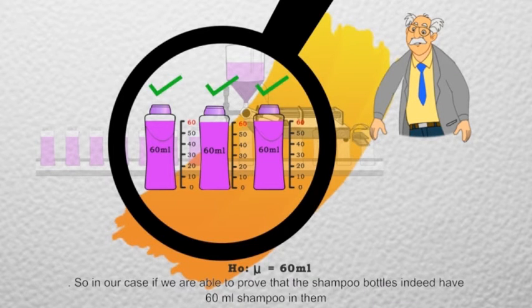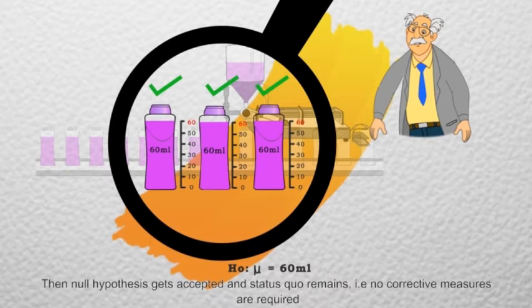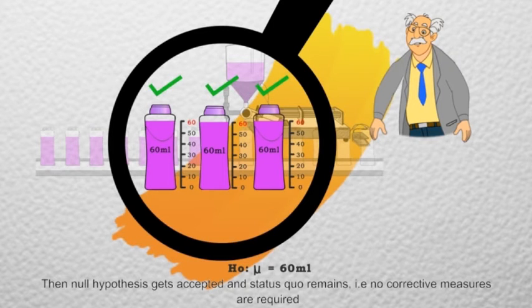So in our case, if we are able to prove that the shampoo bottles indeed have 60 ml shampoo in them, then null hypothesis gets accepted and status quo remains. That is, no corrective measures are required.